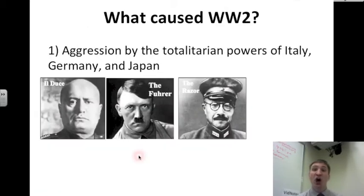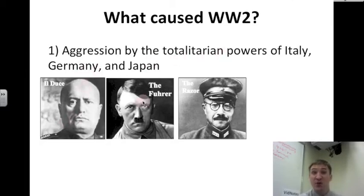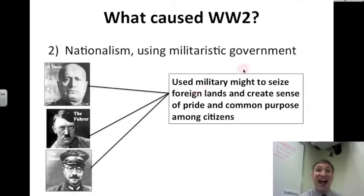What caused World War II? I'm going to talk about six different causes. Number one: aggression by the totalitarian powers of Italy with Mussolini, Germany with Hitler, and Japan with Hideki Tojo and Emperor Hirohito. Number two: nationalism using militaristic governments. These three men used nationalism and a strong military in all of the wrong ways.